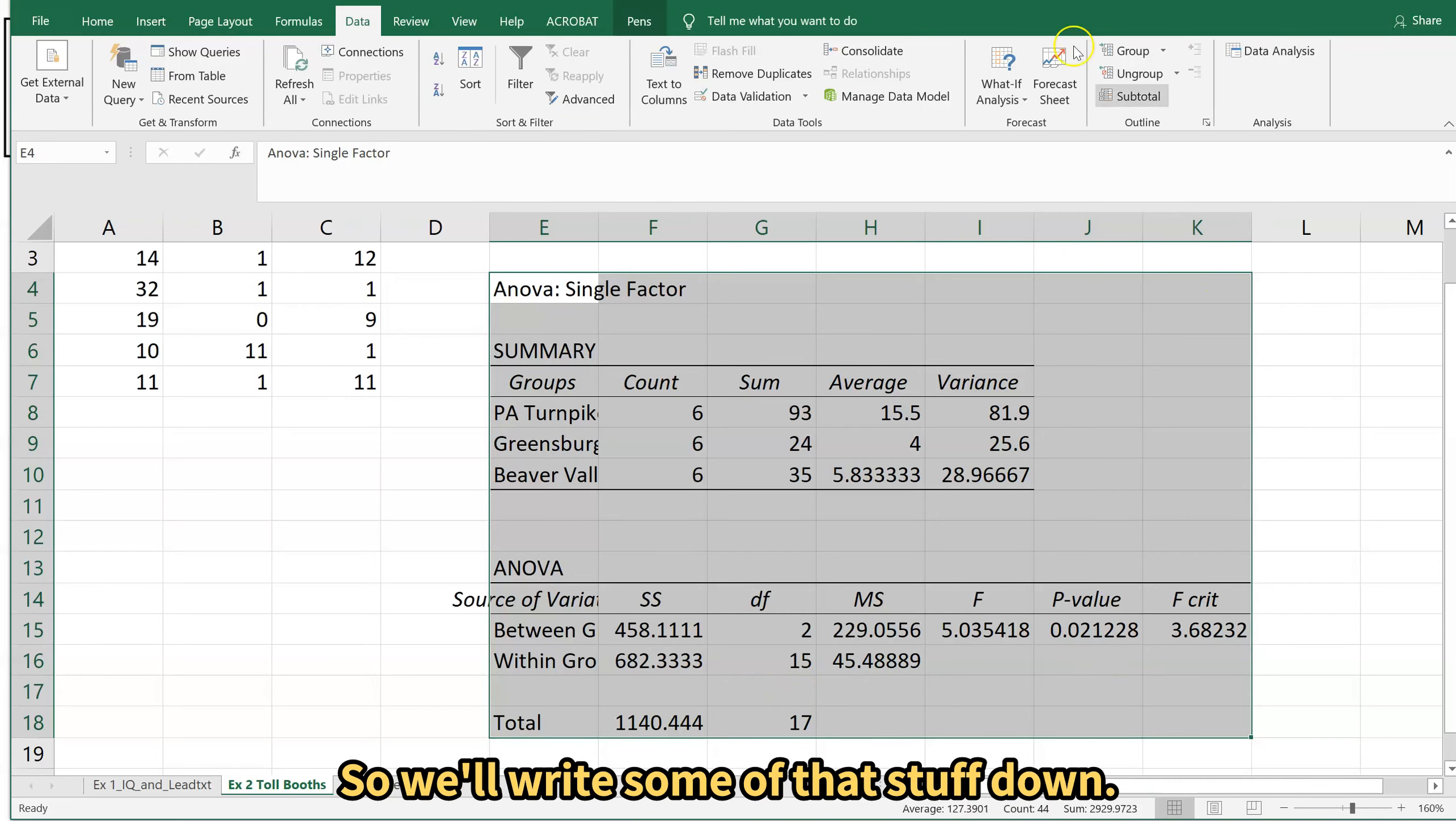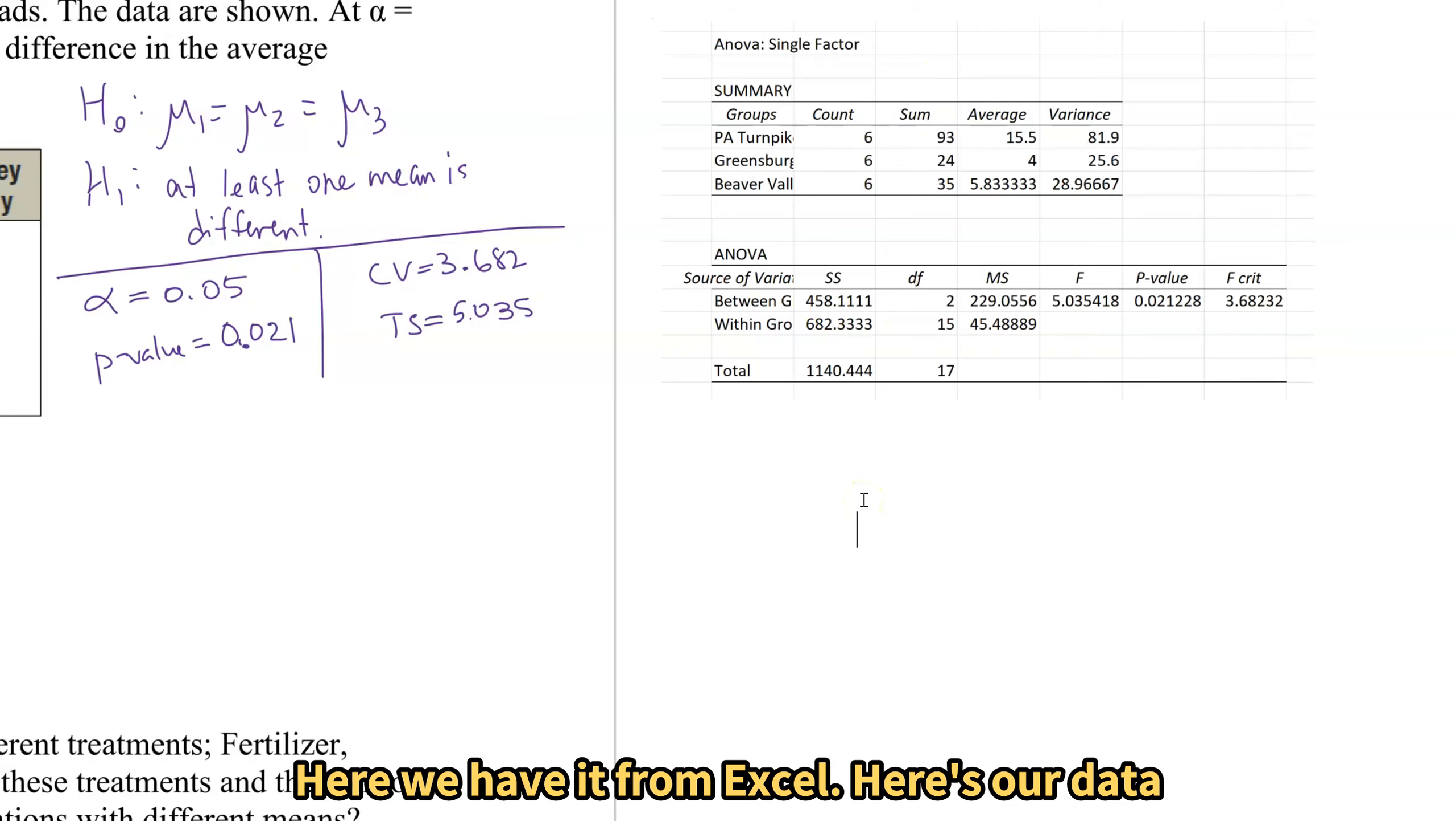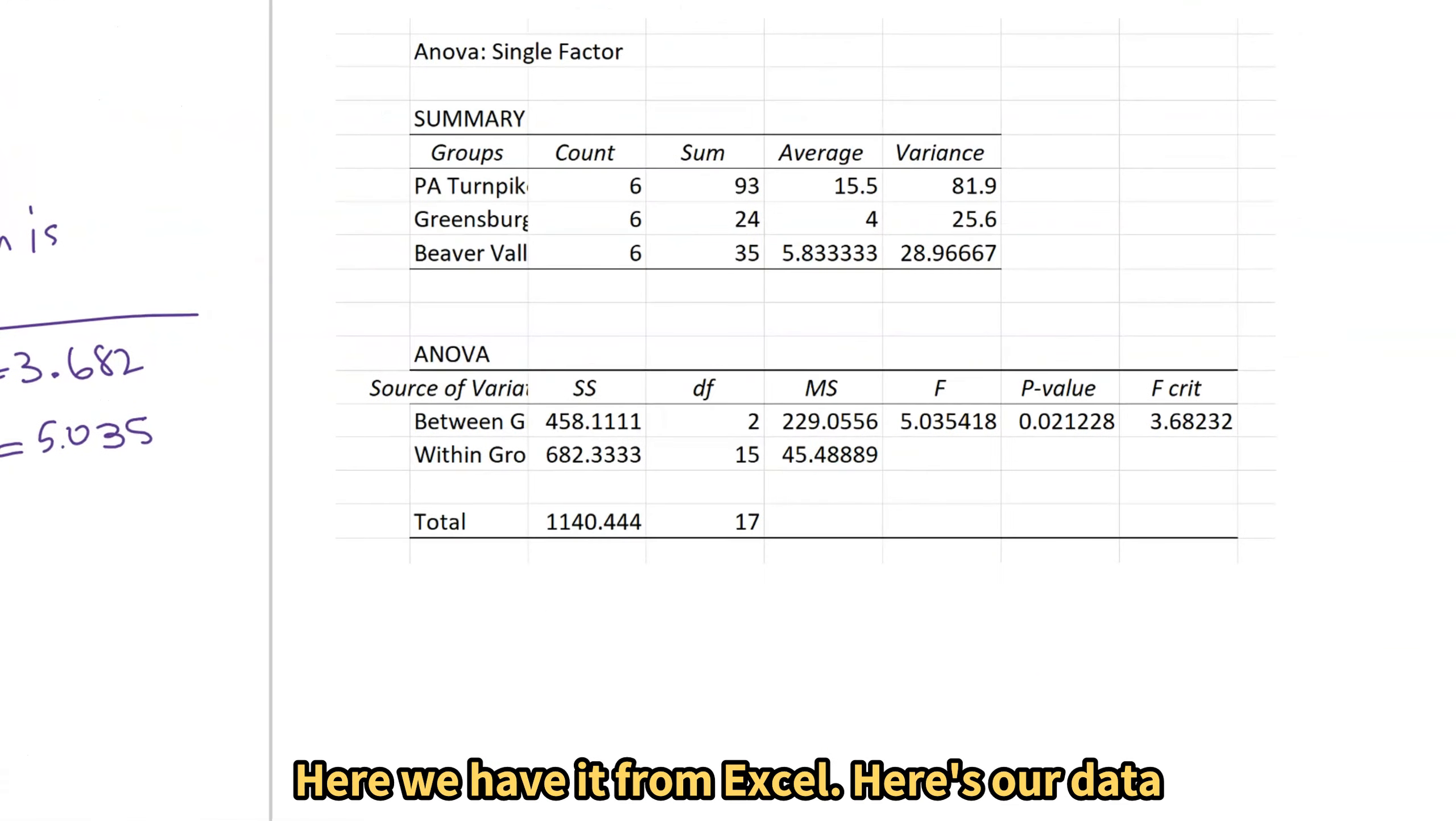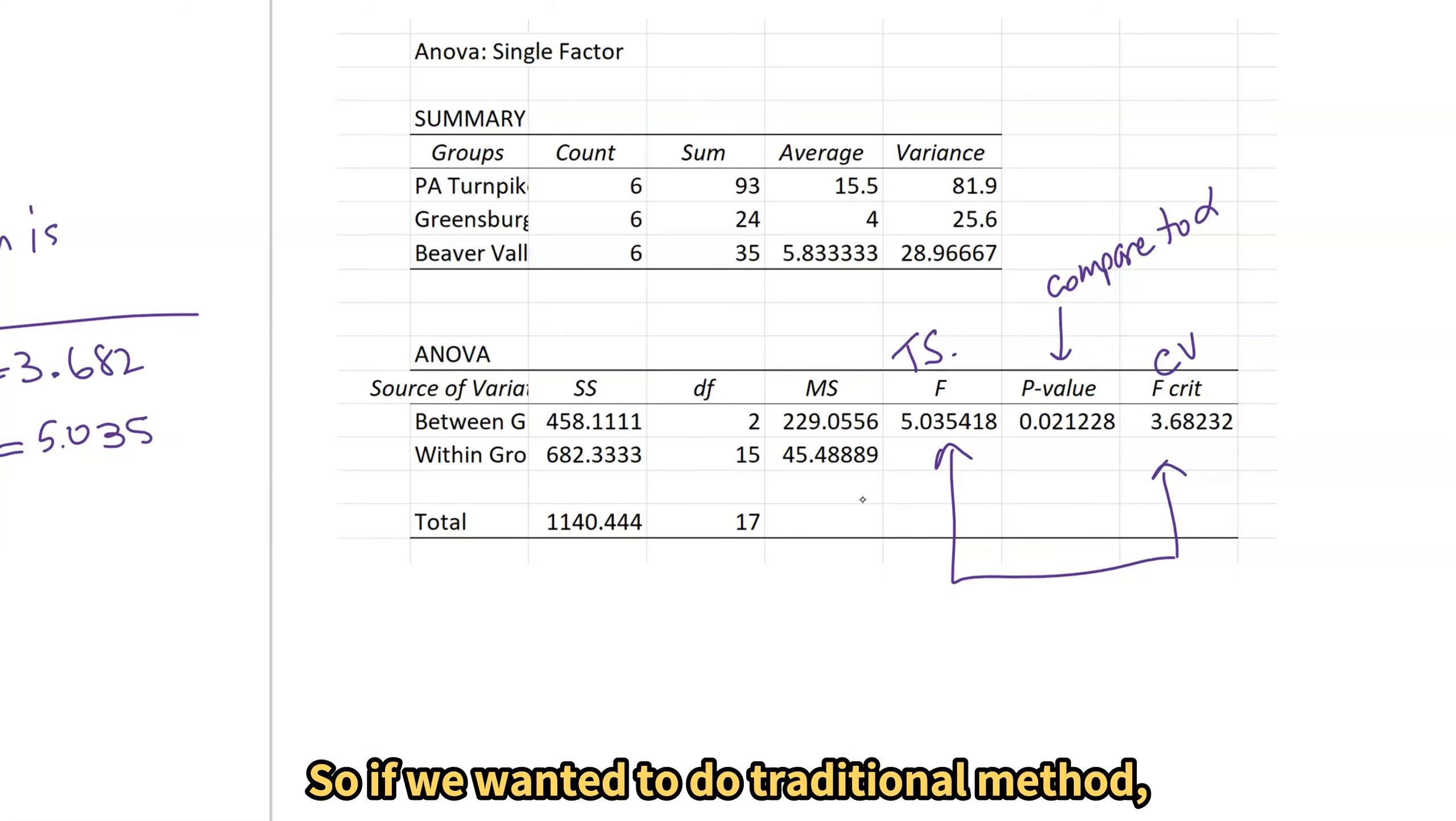So we'll write some of that stuff down. All right and here we have it from Excel. Here's our data that we need. Our p value here we're going to compare to alpha. Our F here this is our test statistic. F crit is our critical value so if we wanted to do traditional method we would compare those.